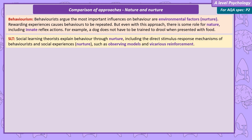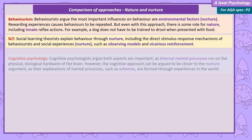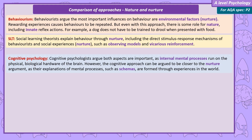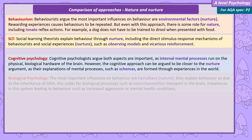Social learning theorists explain behaviour through nurture — both the direct stimulus-response mechanisms of behaviourists, and social experiences such as observing models and vicarious reinforcement. Cognitive psychologists argue both aspects are important, as internal mental processes run on the physical or biological hardware of the brain. However, the cognitive approach can be argued to lean closer to nurture, as schemas are formed through experiences in the world.